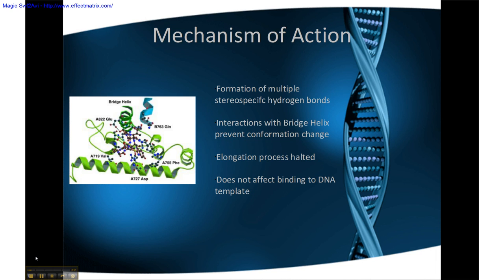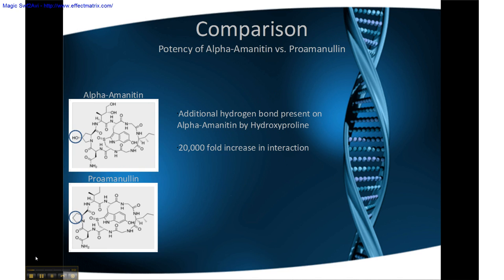The mechanism behind this is based upon Alpha Amanitin's stereospecific hydrogen bonds, which block conformational change through interaction with the bridge helix. This does not affect binding to the DNA template, but it effectively halts the elongation process. An additional hydrogen bond present on Alpha Amanitin by hydroxyproline results in a 20,000-fold increase in its interaction.